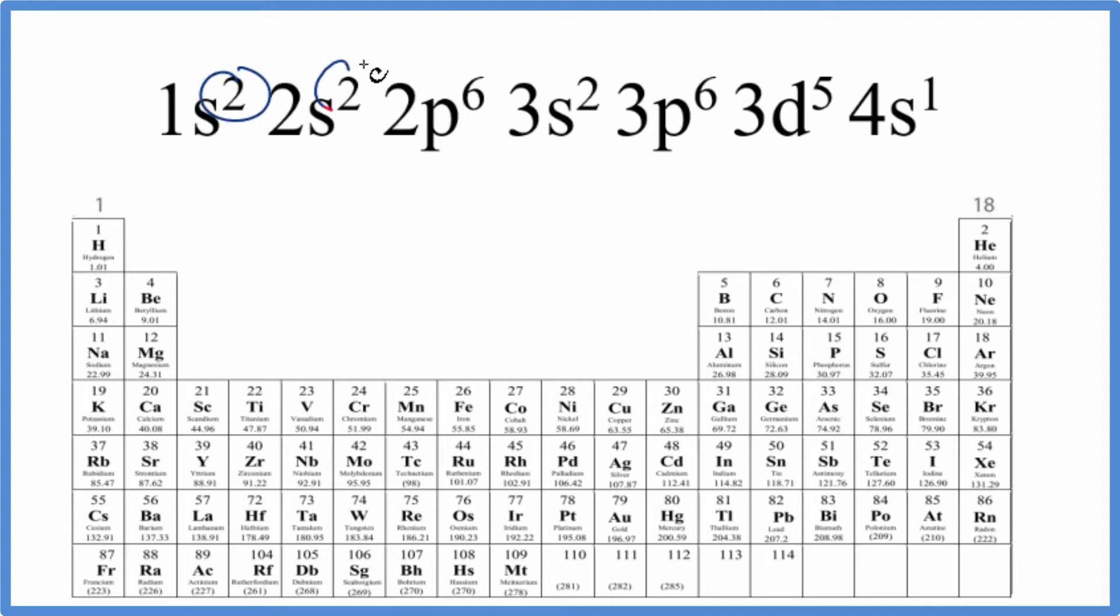The first way is we count up all the electrons in the configuration, and when we do that we end up with a total of 24 electrons in this electron configuration.